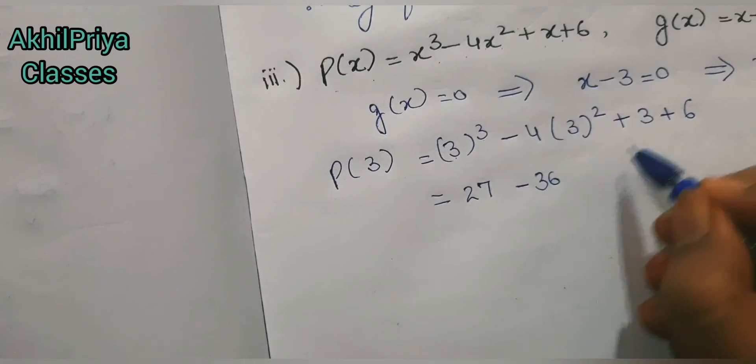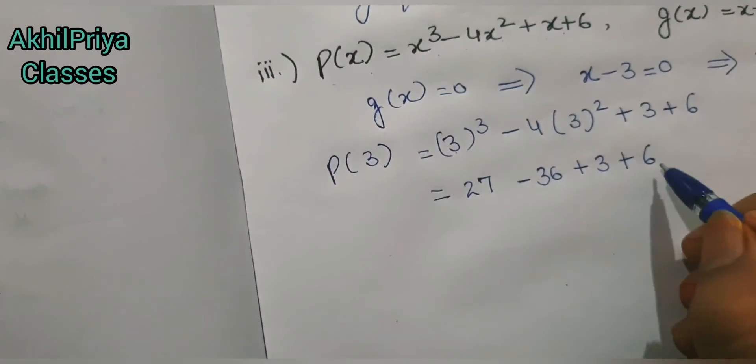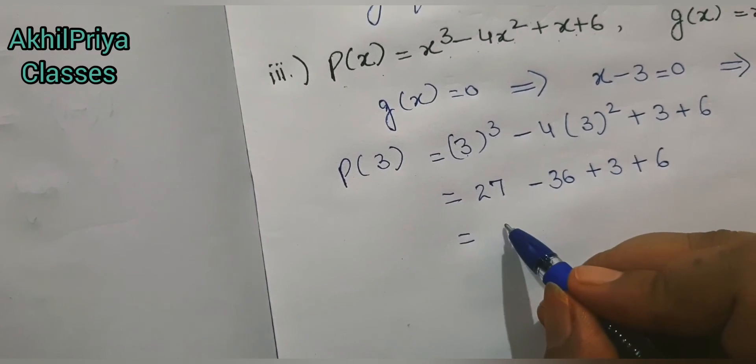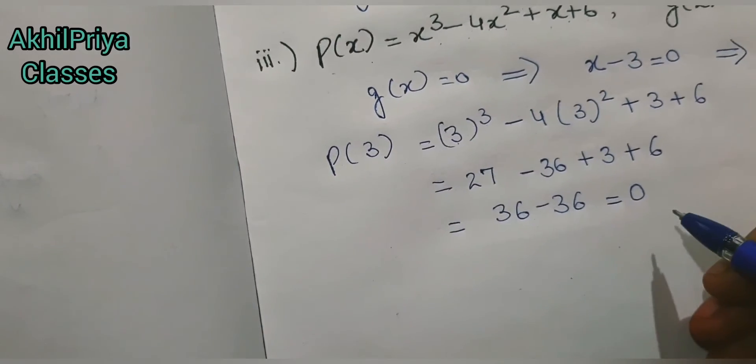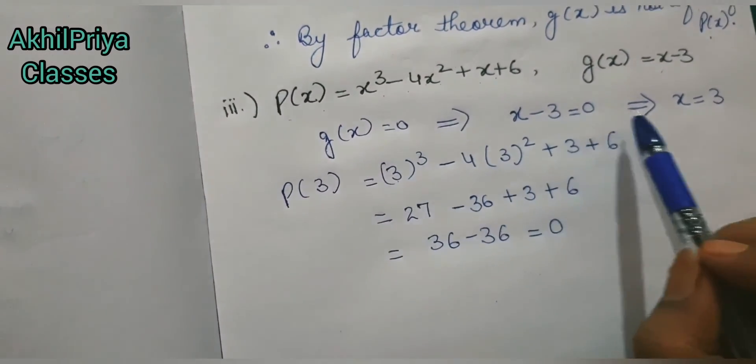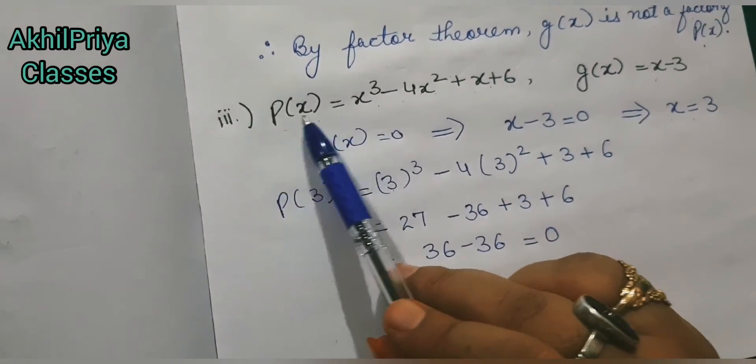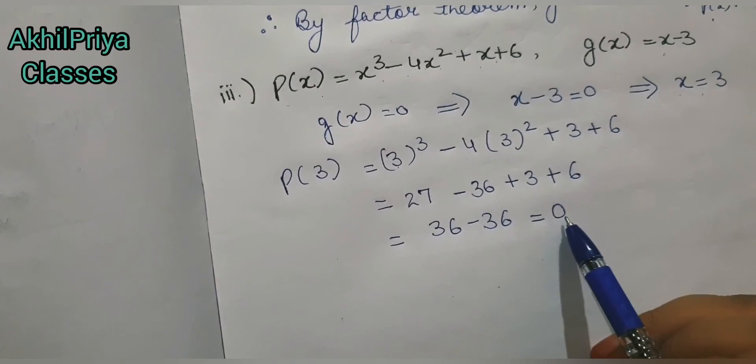So this becomes 27 - 36 + 3 + 6. When I simplify this, I get 36 - 36 which equals 0.